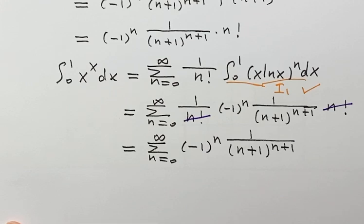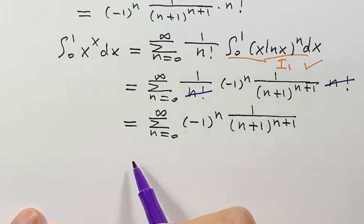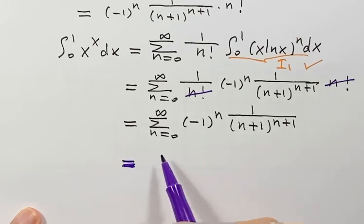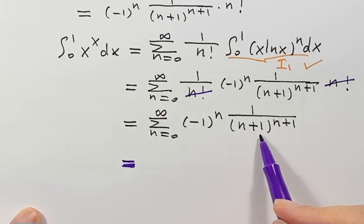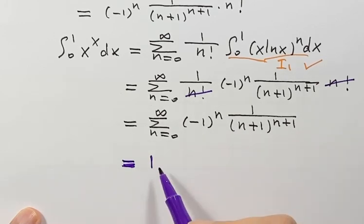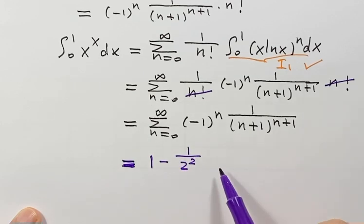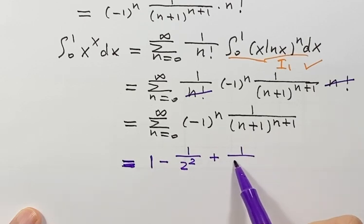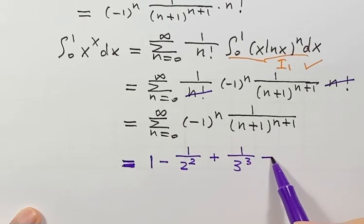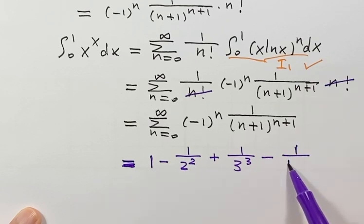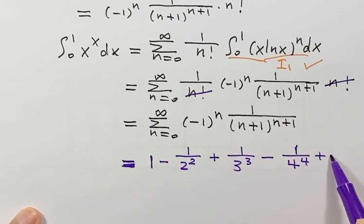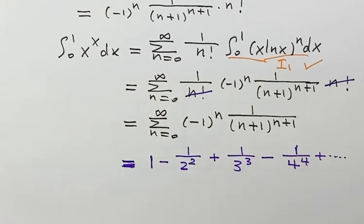Let's expand the first few terms. When n is 0, the term is positive 1. The next term is negative 1 over 2 squared. Then positive 1 over 3 cubed. Then negative 1 over 4 to the fourth, and so on. So we have proved the identity: the integral from 0 to 1 of x to the x dx equals this series.